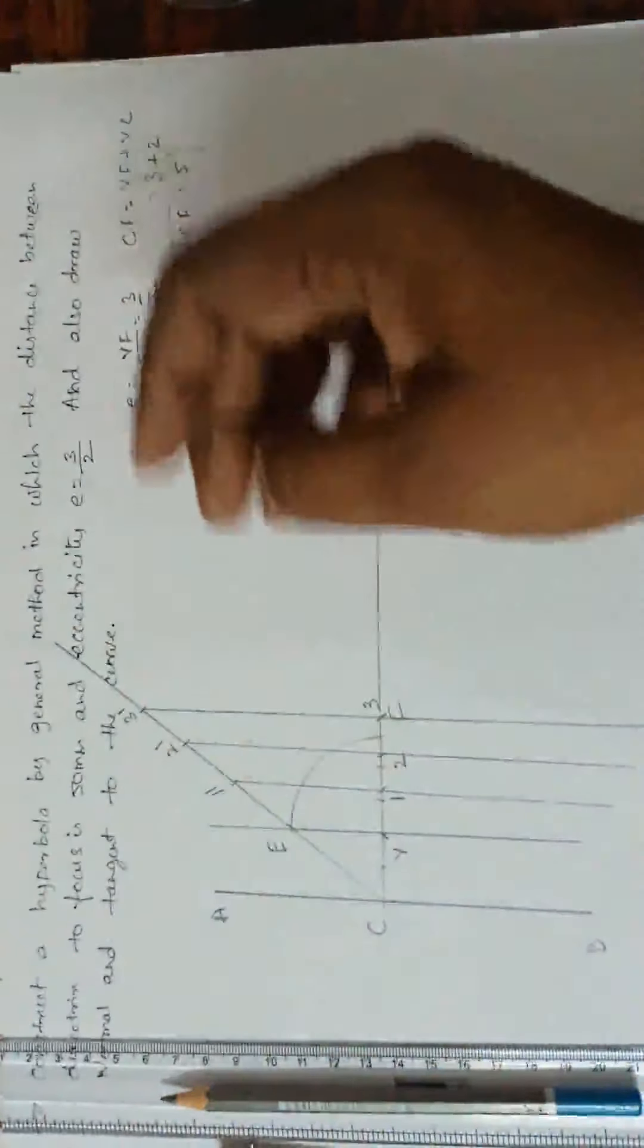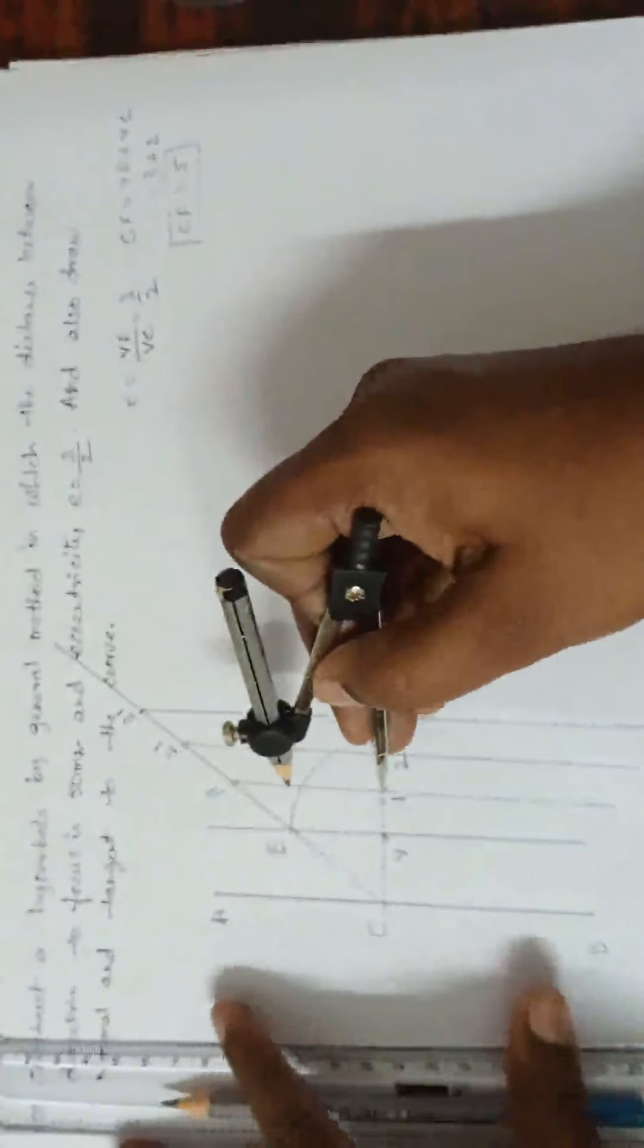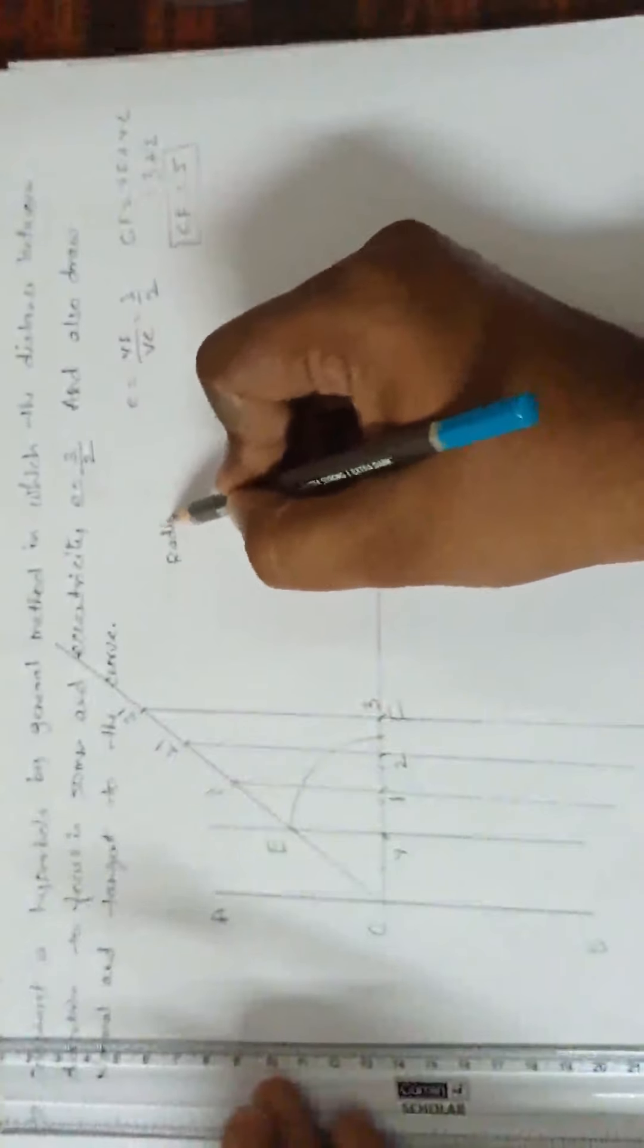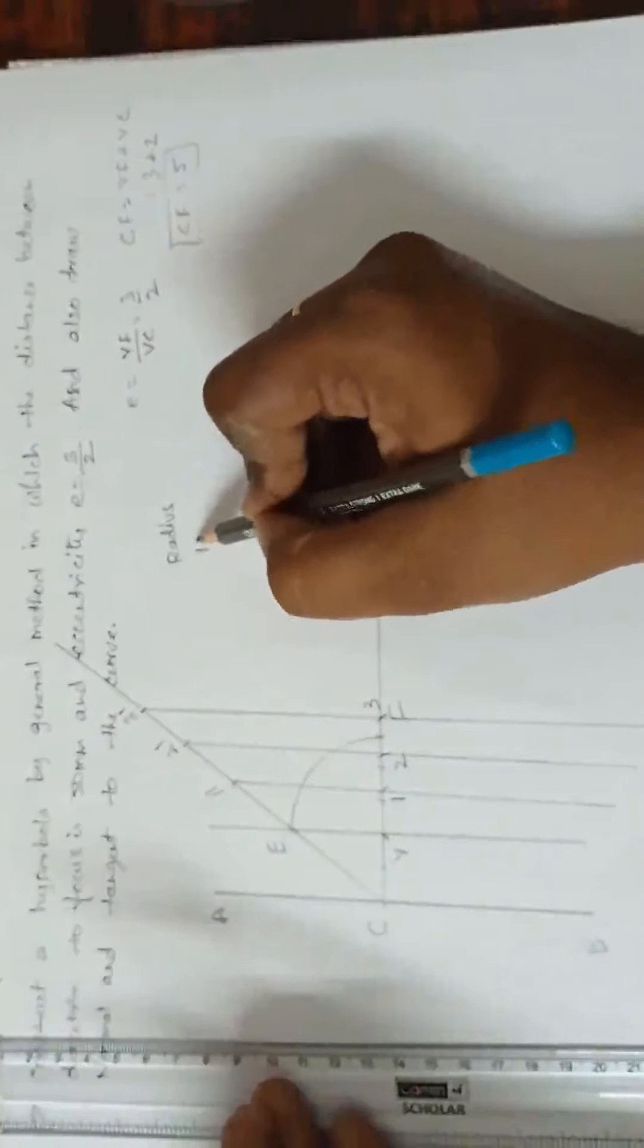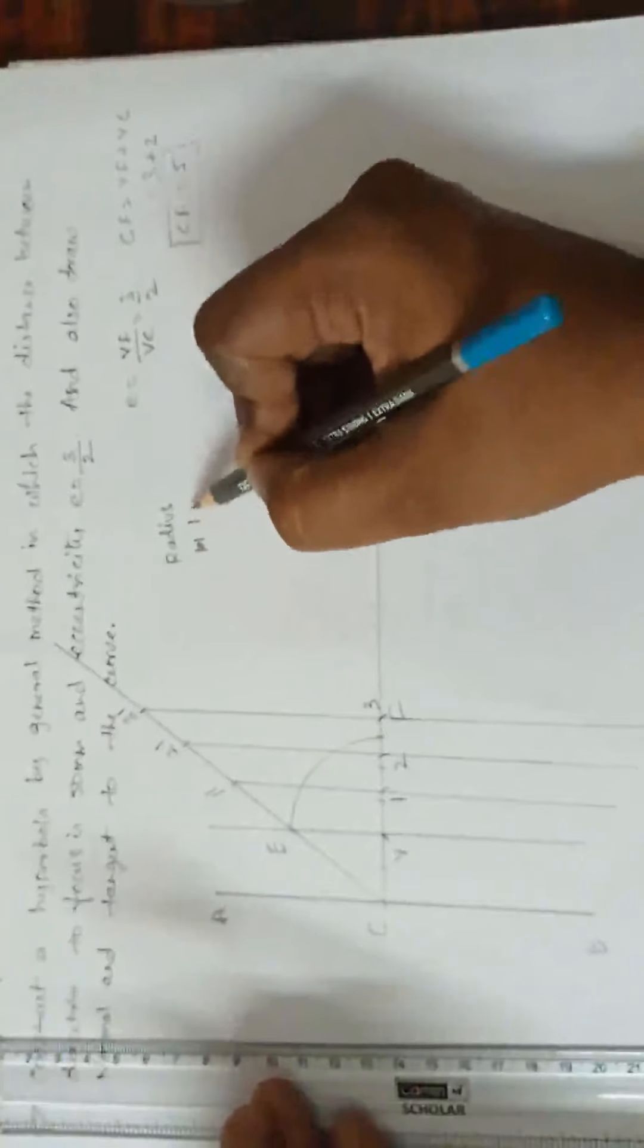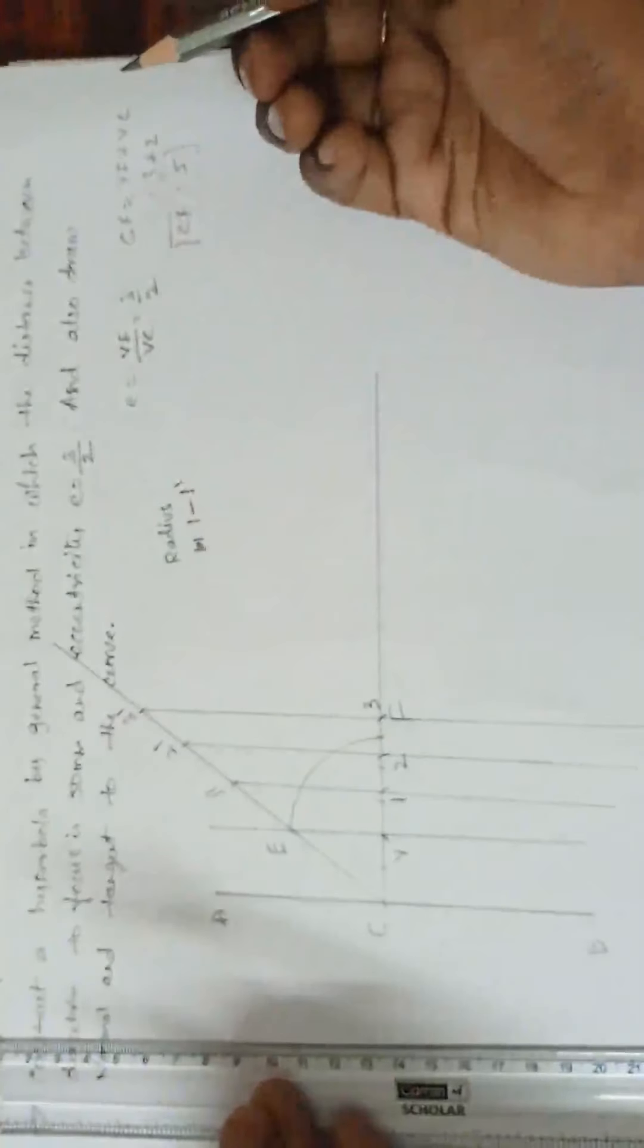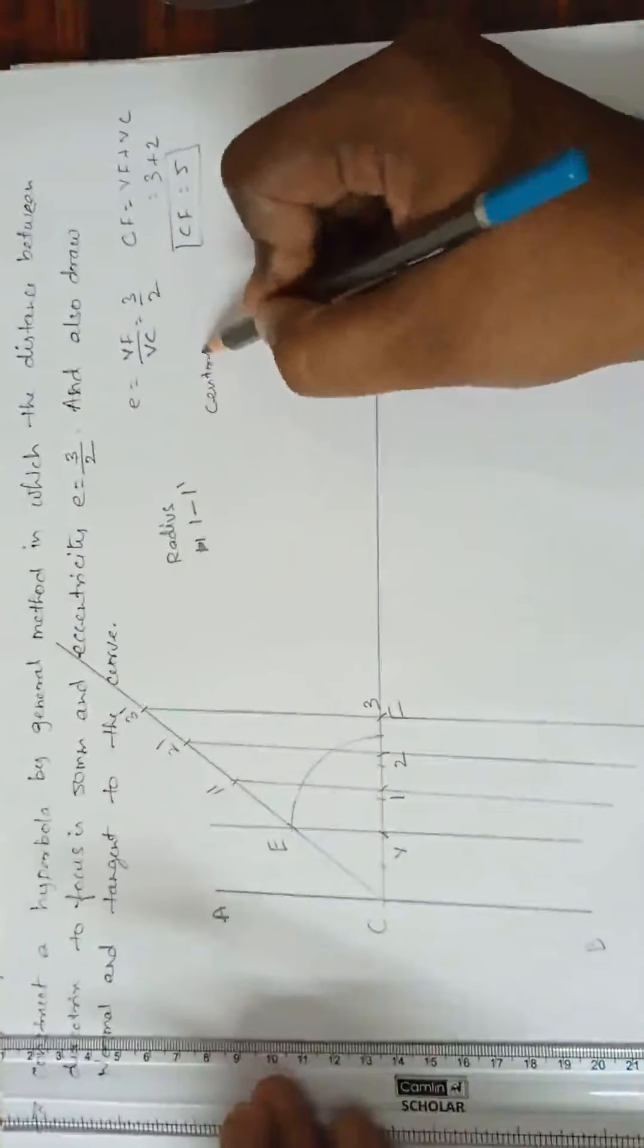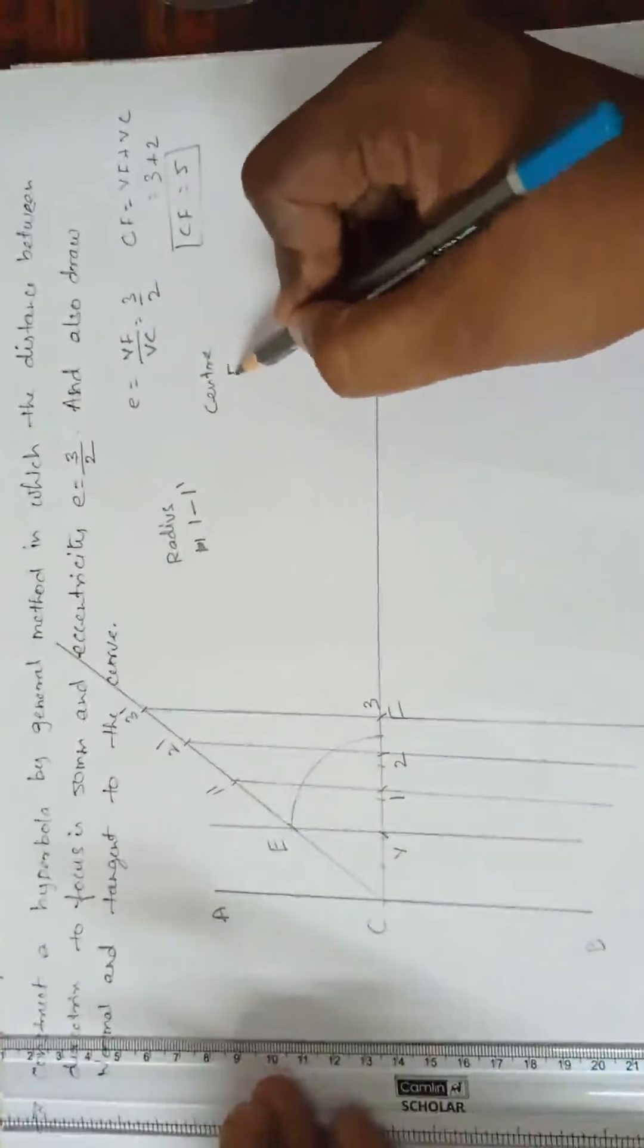Now, what to do is, take a radius 1, 1 dash. I am writing in the right side. Radius 1, 1 dash. Center is always F, focus.